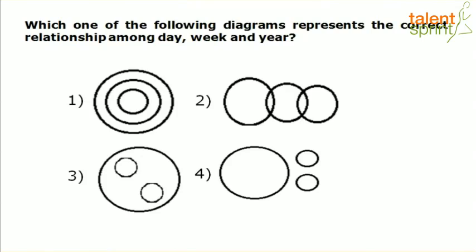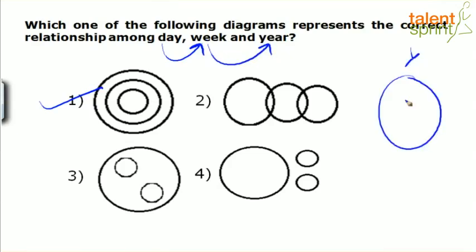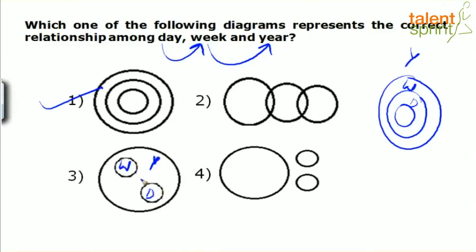Next: which one of the following diagrams represents the correct relationship among day, week and year? This is very simple — option 1 has to be the correct answer. Day is a part of week, and week is completely inside year. So the outermost circle is year, all weeks are inside year, and all days are inside weeks — giving us a nested set of three concentric circles.